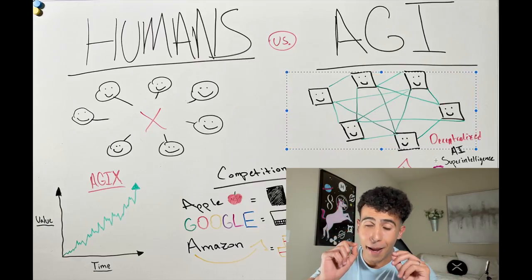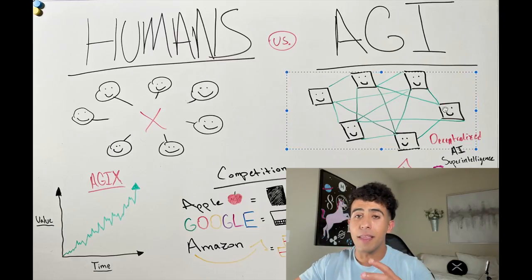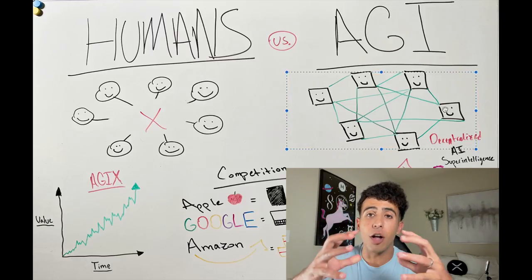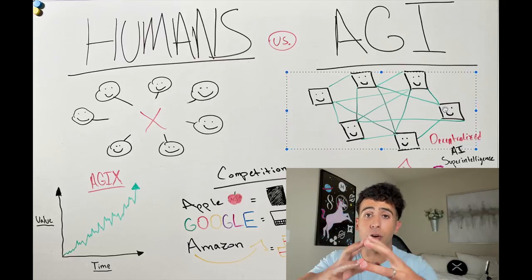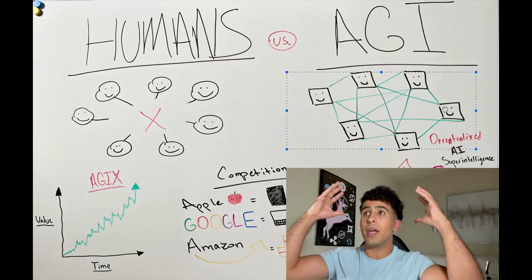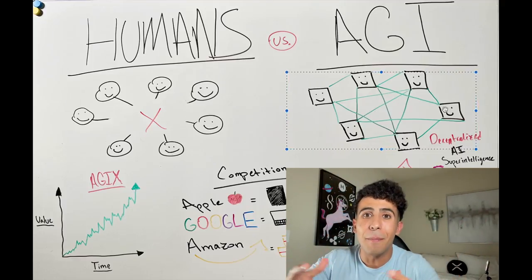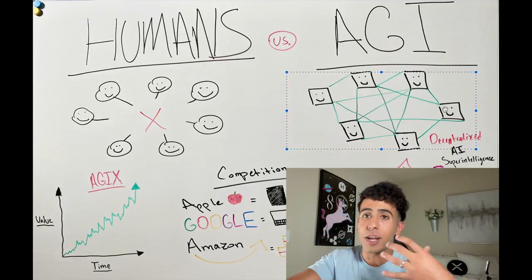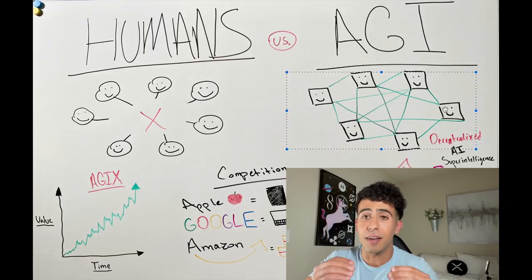But a major difference is that they can all be interconnected. They can all learn from one another. They can all upload what they have learned into a storage system that basically keeps on learning and learning and learning. And that is the idea of the singularity.